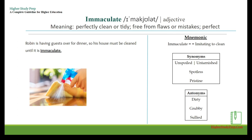Immaculate — it's an adjective which means perfectly clean or tidy, free from flaws or mistakes. For example, Robin is having guests over for dinner, so his house must be cleaned until it is immaculate. The mnemonic: the word immaculate can be remembered as 'imitating to clean.'